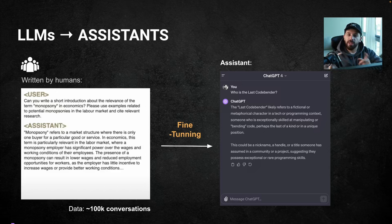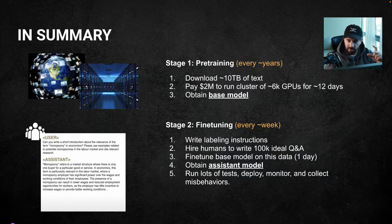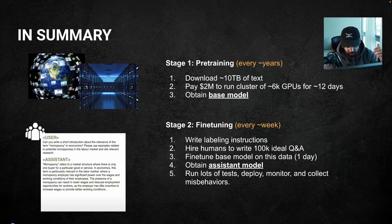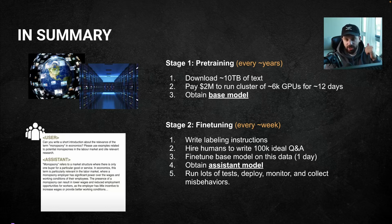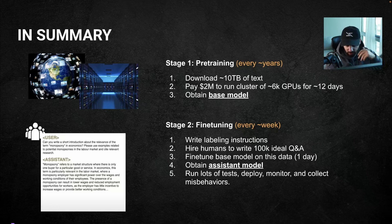In summary, to get an LLM you go through two stages. Stage one is pre-training: done every few years because it's expensive — costs millions of dollars, requires downloading terabytes of text from the internet — and you get a base model. Stage two is fine-tuning: you write labeling instructions for hundreds or thousands of people who produce ideal Q&A-style data, you fine-tune the model on that data in about a day, and you get an assistant model like GPT-4 in ChatGPT. Then you run tests, deploy, monitor for misbehaviors, retrain again — something that can be done every few weeks.